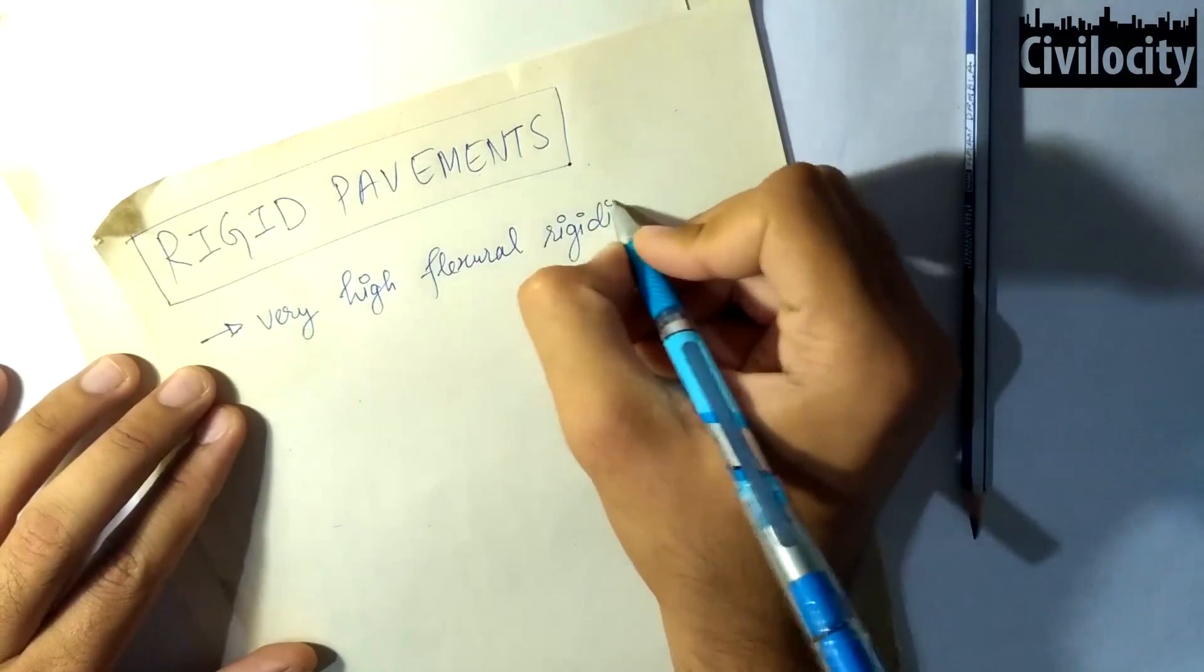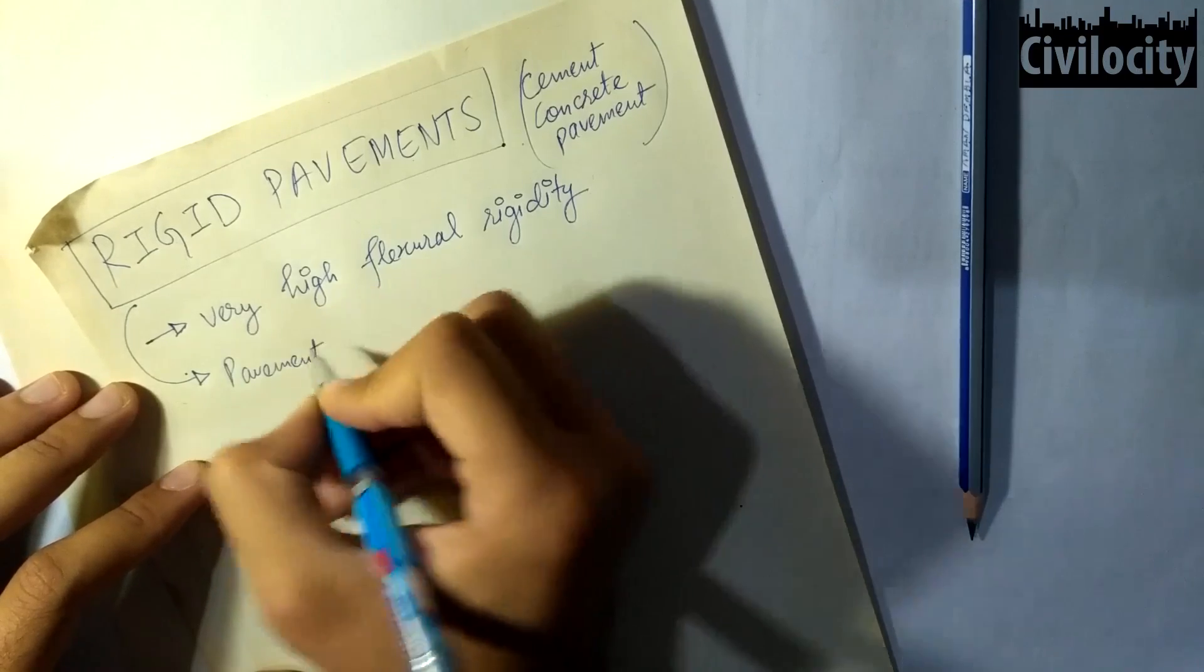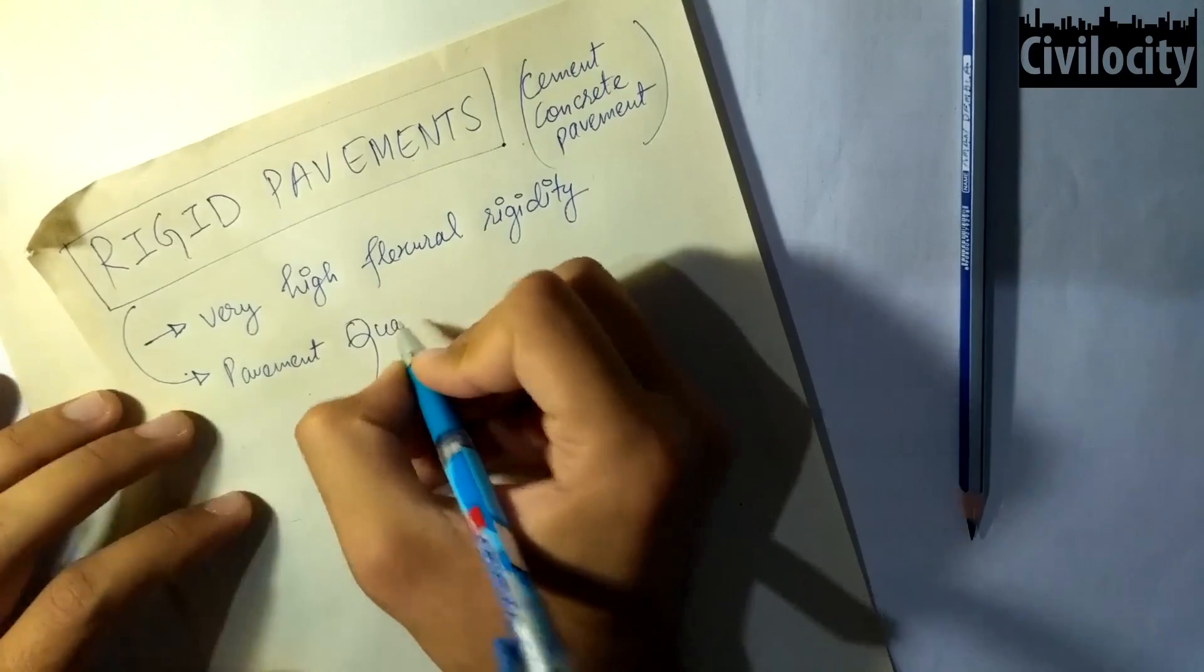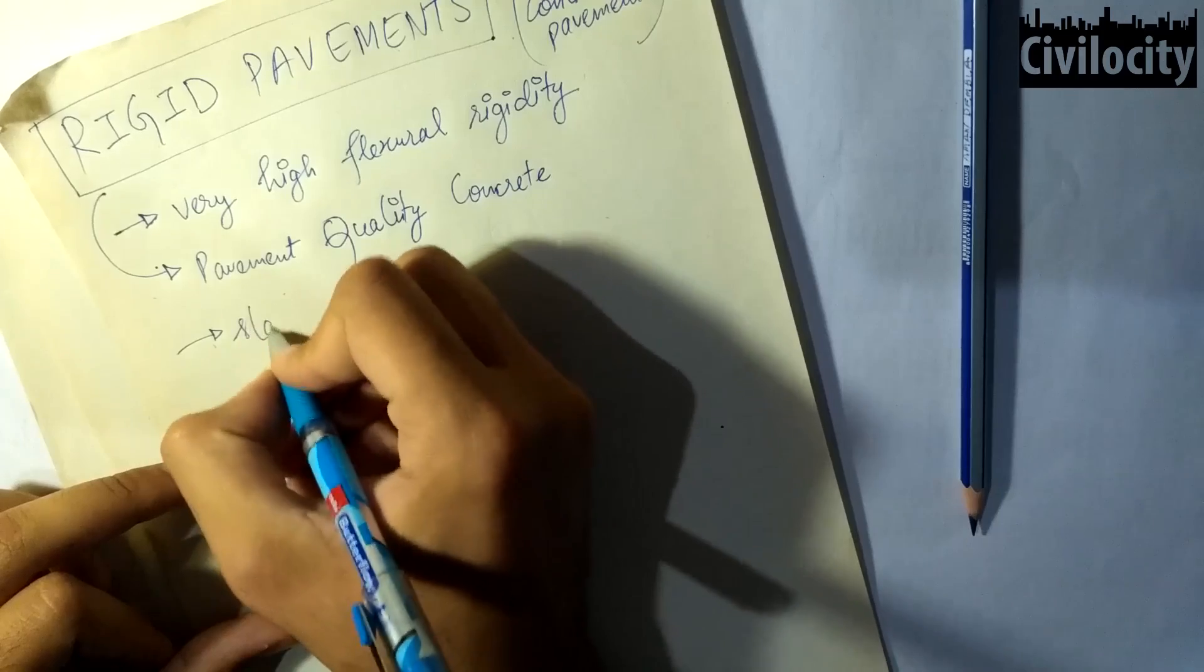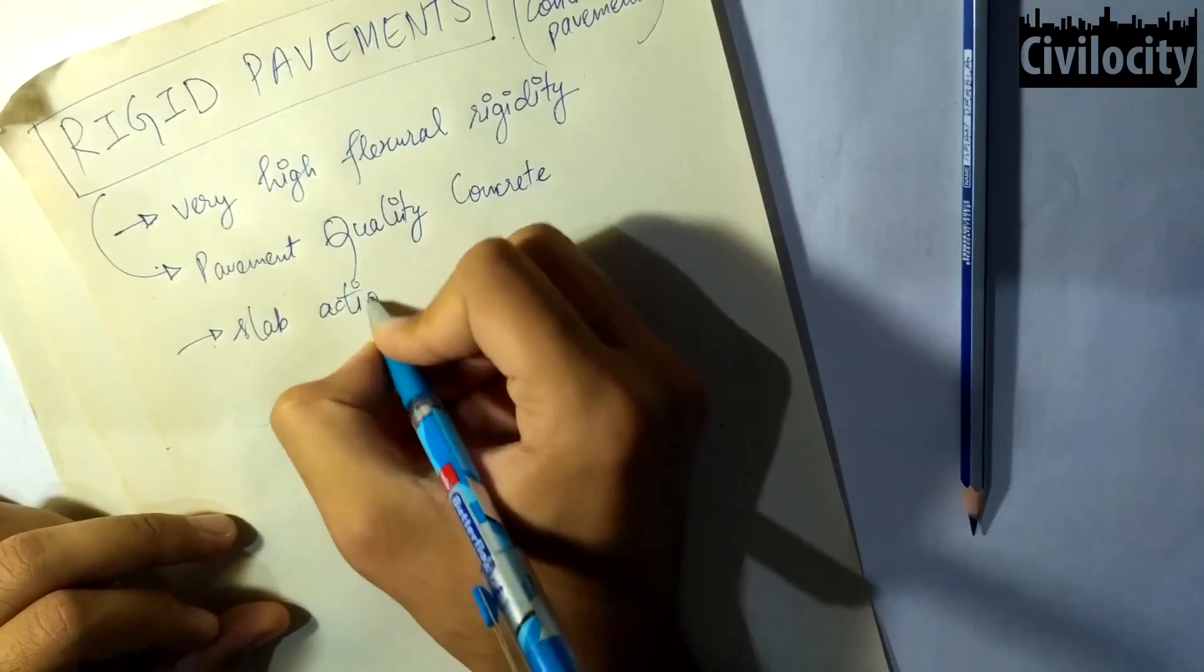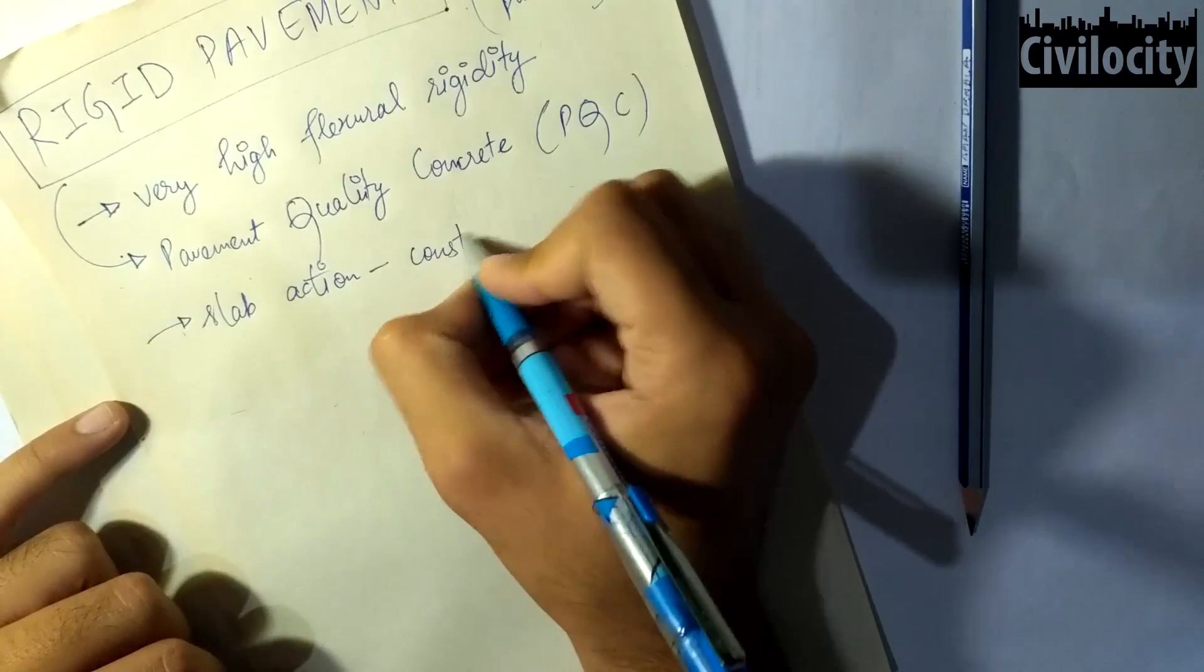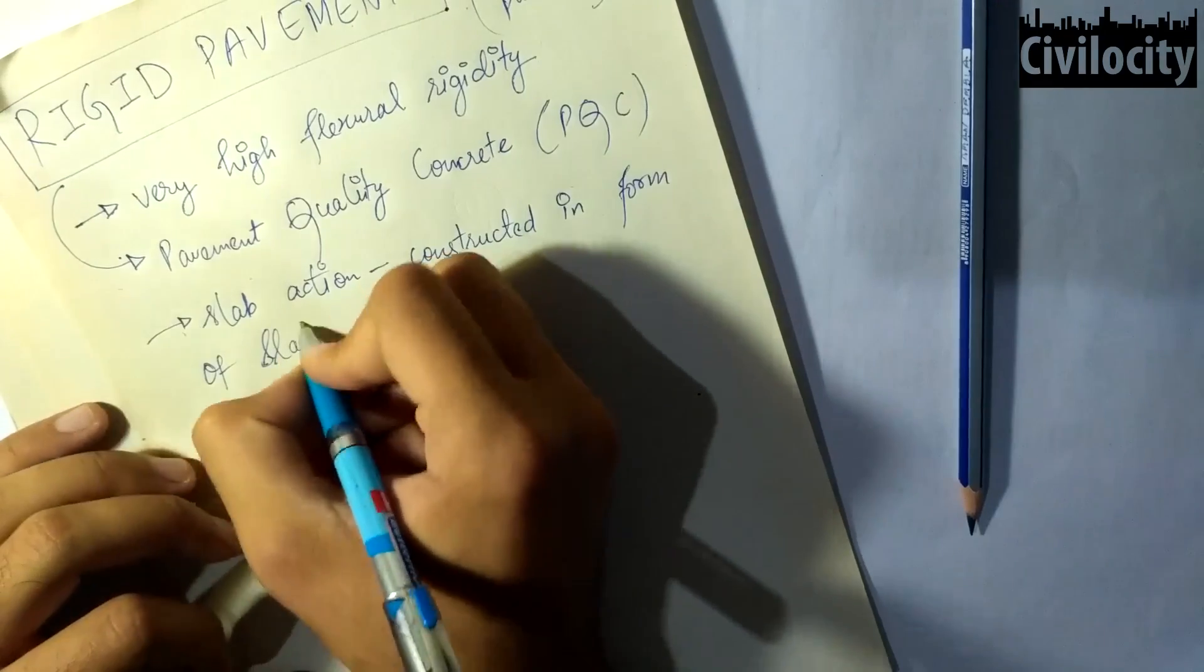Generally pavement quality concrete or PQC is used as the most common material for the design and construction of rigid pavements. The rigid pavements are constructed in the form of slabs and transmit the wheel load stresses through a much wider area below the pavement slab. Considering the long life of CC pavements they are not laid directly over the soil subgrade.